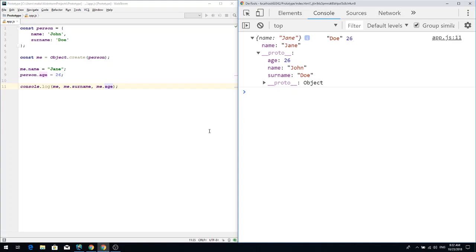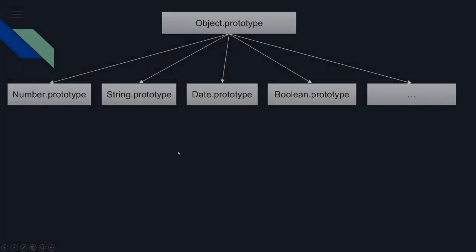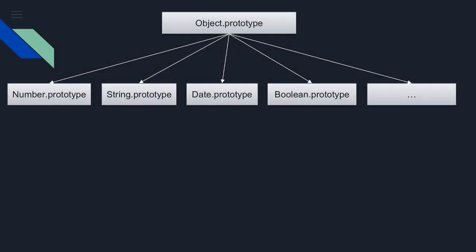How does the native prototype chain work? Basically, every native object — which includes Number, String, Date, Boolean, and many others such as RegExp — extends its prototype from Object.prototype. This means that if some property exists on Object.prototype, it also exists on Number.prototype, String.prototype, Date.prototype, and so on.